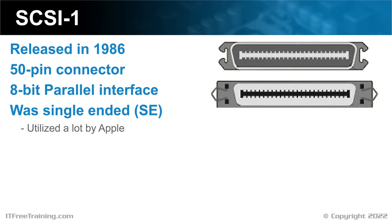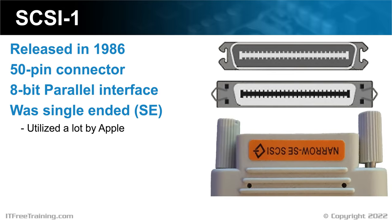The SE connection was utilized a lot by Apple, so if you are working on an old Apple system, it probably has an SE connection. In some cases, your SCSI devices and cables may be labeled as SE; in other cases, they may not. Before I go into more detail about the different types of signaling used in SCSI, I will first have a look at the different types of connectors.